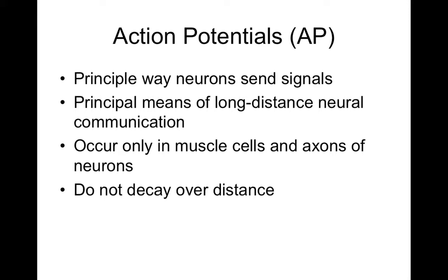Action potentials only occur in muscle cells and the axons of neurons. Do you find action potentials in dendrites? No. How about cell bodies? Nope, just the axons. In dendrites and cell bodies, we have different types of currents that lead to the generation of action potentials — they're called graded potentials — but what we focus on here is the actual action potential itself.